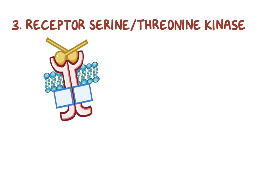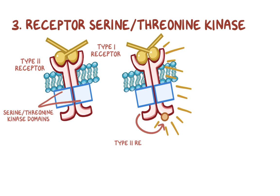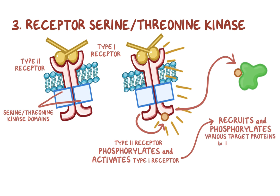Finally, there are the receptor serine threonine kinases, which have a serine threonine kinase domain on their intracellular end. There are two classes — type 1 and type 2 — which are structurally similar. Ligand binding brings the two together so that the type 2 receptor can phosphorylate and activate the type 1 receptor, which in turn recruits and phosphorylates various target proteins to relay the signal.